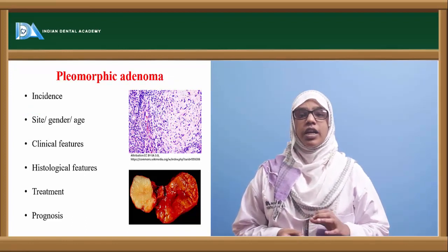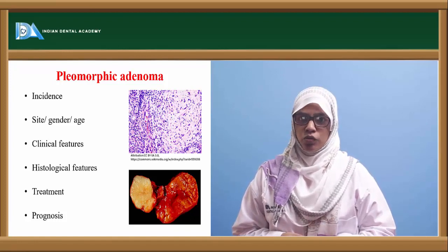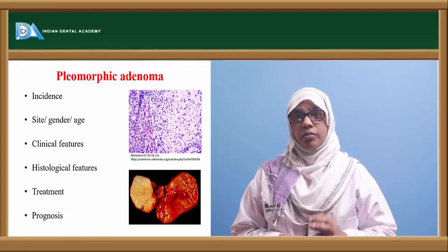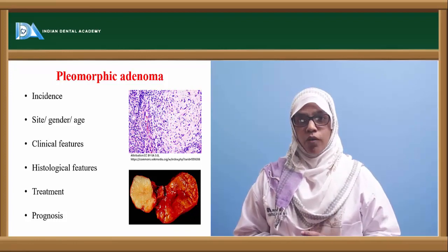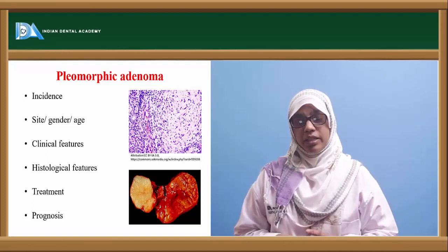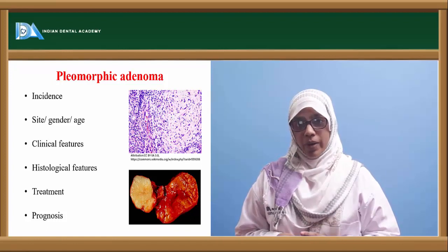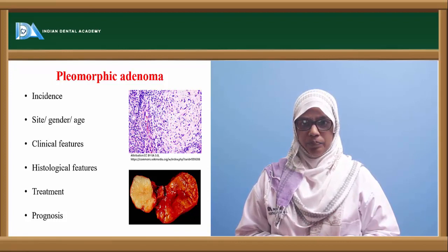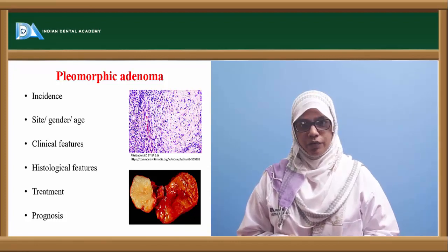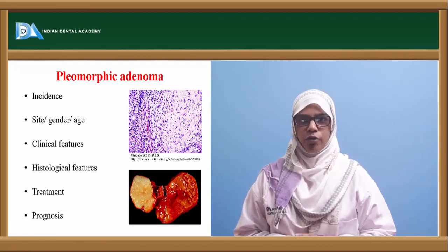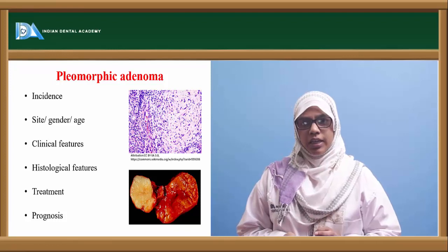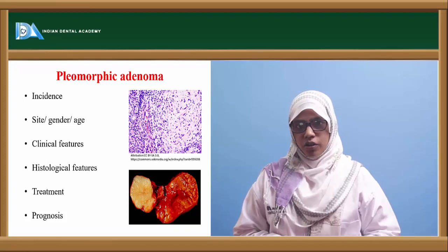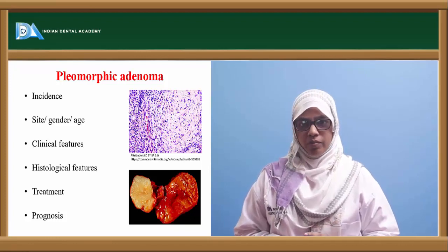Let's move on to pleomorphic adenoma. It accounts for 90% of all tumours of the salivary gland. It is more commonly seen affecting the major salivary gland, specifically the parotid gland, followed by the minor salivary glands of the palate, the lip, and then to some extent the submandibular gland. Clinically they appear as a gradually increasing swelling either near the ear lobe or at the angle of the mandible.